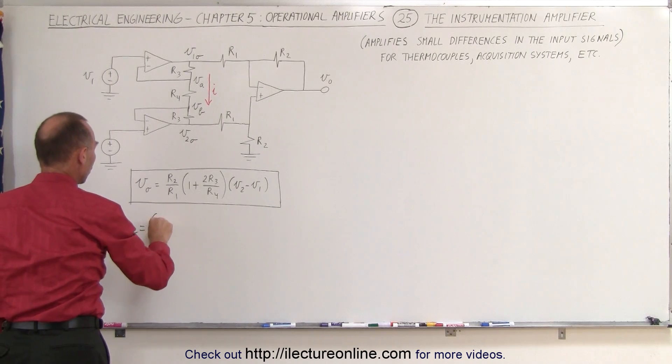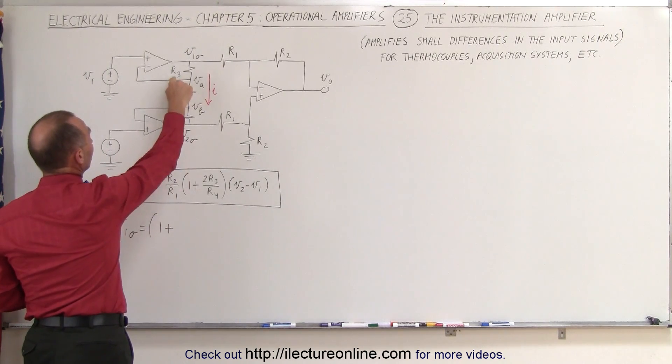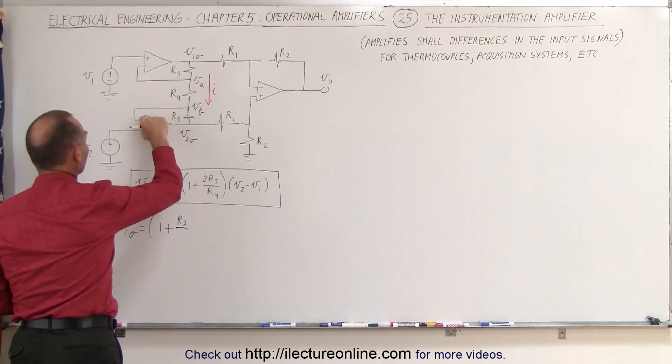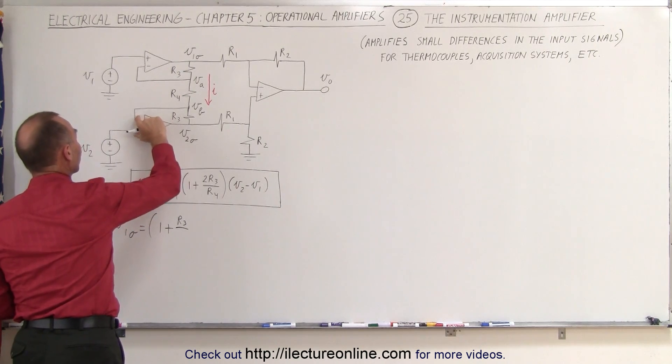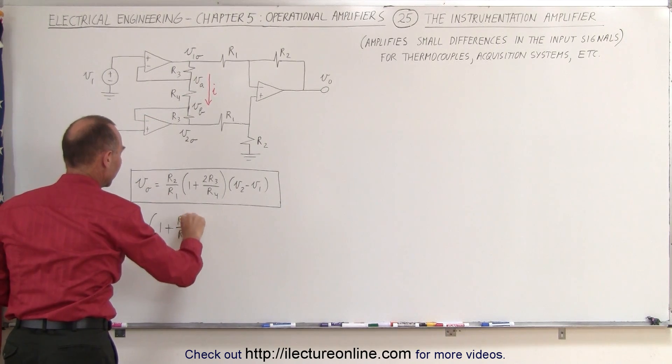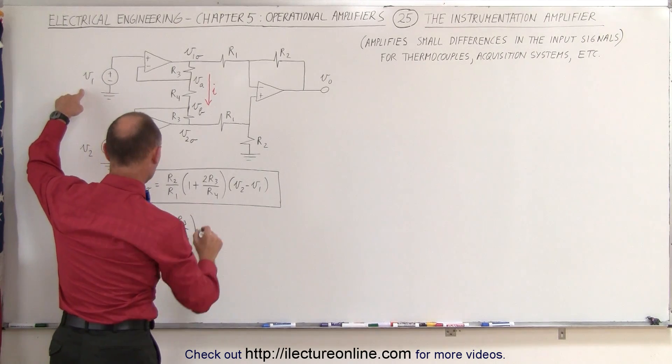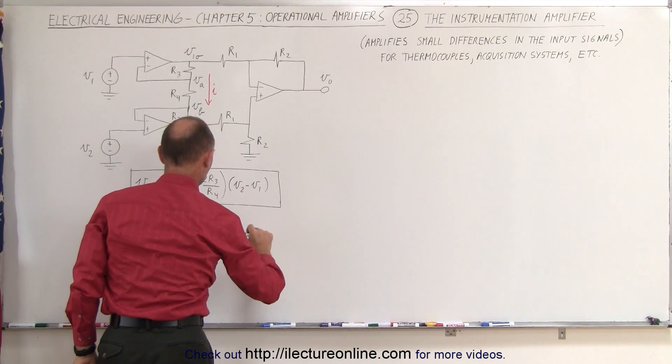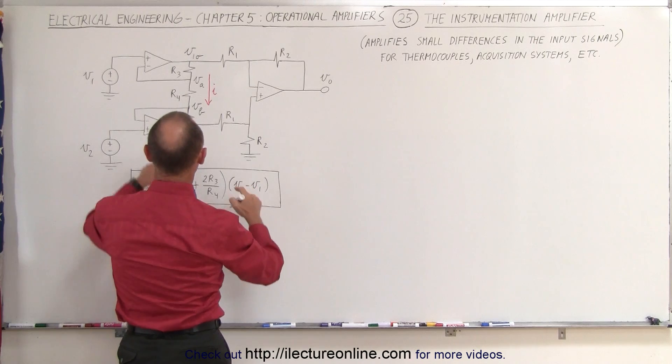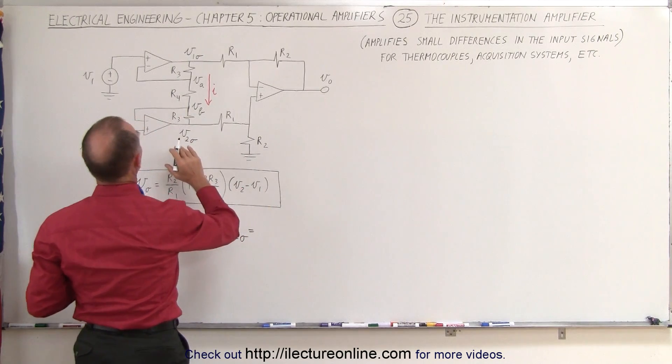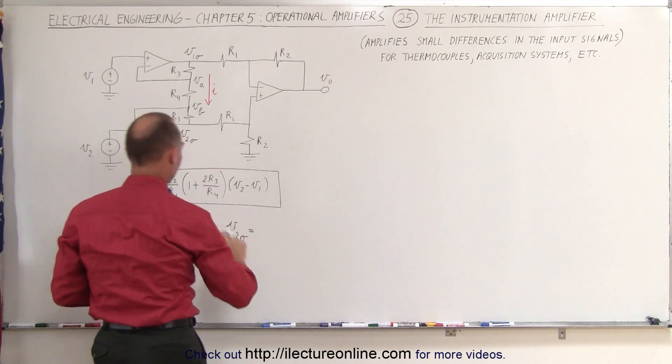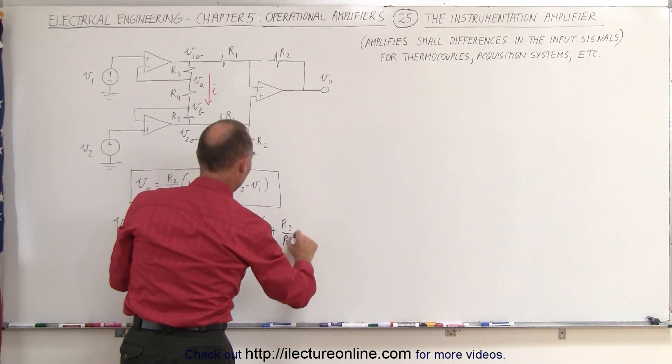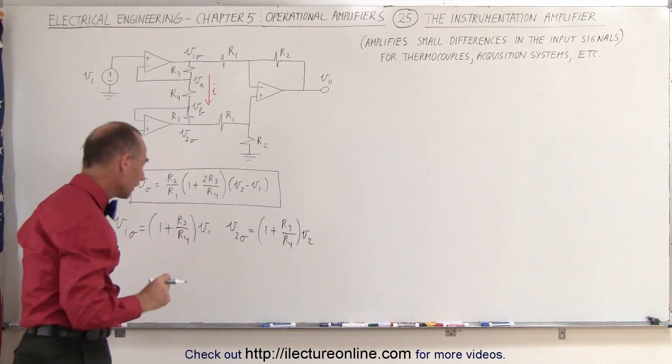V1 output is equal to 1 plus the ratio of the feedback resistor which in this case is R3 divided by the resistor which is connected through this right here. Notice there's no voltage difference here. That would be R4, R4 times the voltage input V1. And we could say that V2 output is equal to in the same fashion, the feedback resistor R3, so we get 1 plus R3 divided by R4 times the input V2.